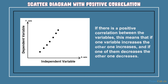If there is a positive correlation between the variables, this means that if one variable increases the other one also increases, and if one decreases the other also decreases. For example, as the speed of a turbine increases, the amount of electricity generated also increases.